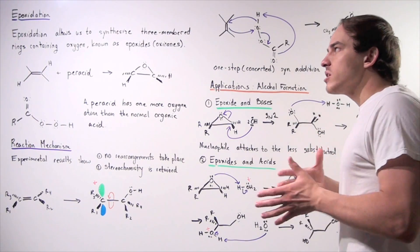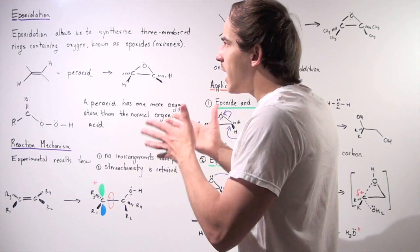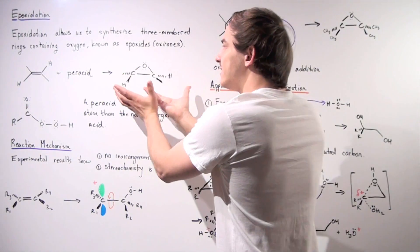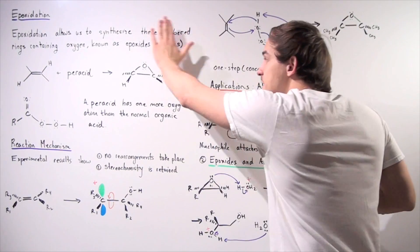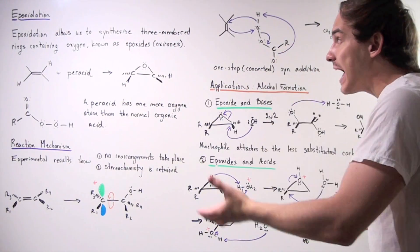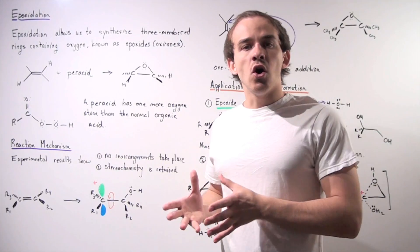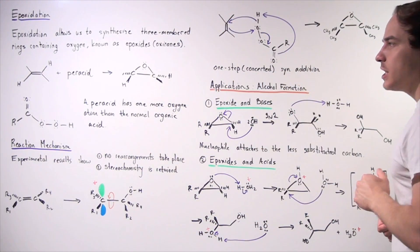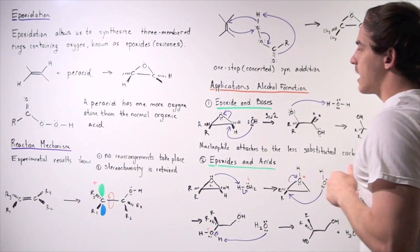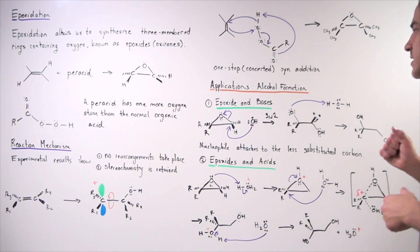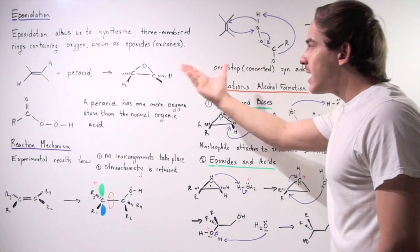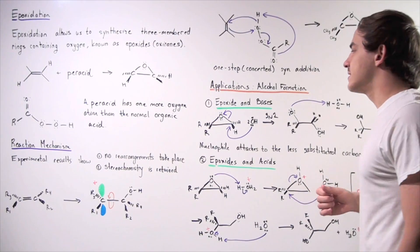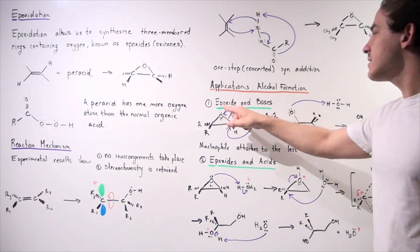So what exactly are some applications of epoxidation reactions? What's the intention of producing this cyclic intermediate? Well, this cyclic intermediate can allow us to produce alcohol compounds. In other words, we can have alcohol formation from these epoxides. Two important ways must be discussed: epoxides mixing with bases and epoxides mixing with acids.